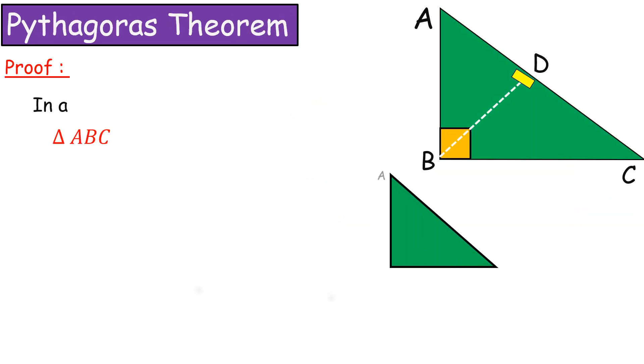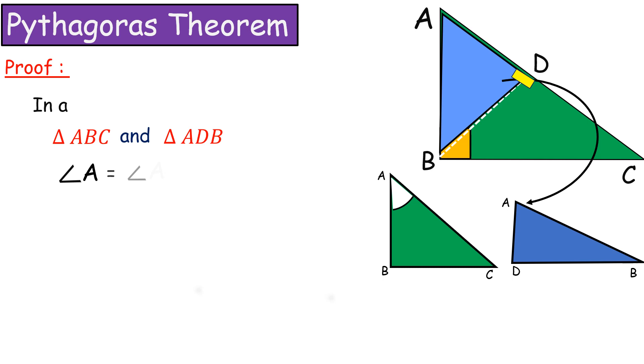Take two triangles: triangle ABC and triangle ADB. Observe these two triangles. Angle A is common. Here, angle B and angle D make 90 degrees. That is, angle ABC and angle ADB are equal to 90 degrees.